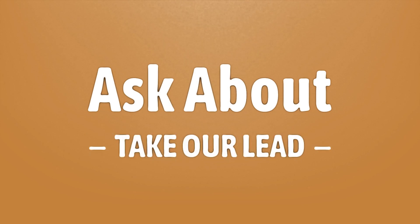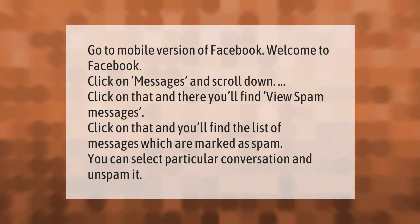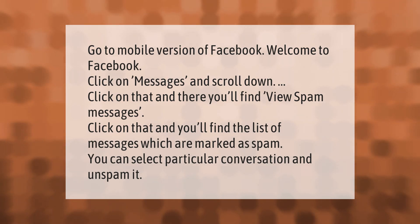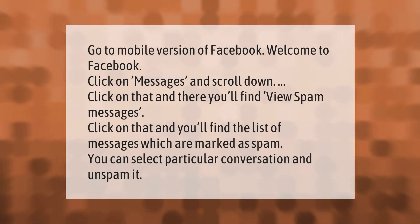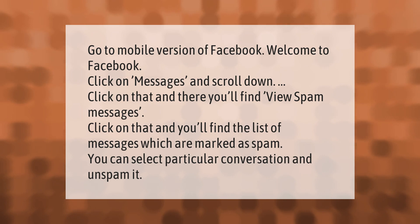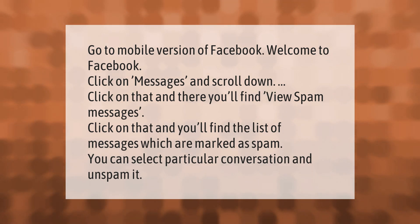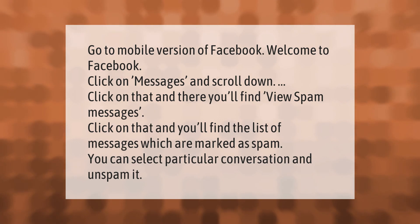Go to the mobile version of Facebook. Welcome to Facebook — click on messages and scroll down. You'll find 'View Spam Messages'; click on that and you'll find the list of messages which are marked as spam. You can select a particular conversation and un-spam it.